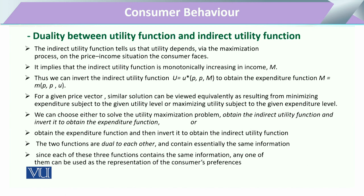The indirect utility function is also increasing in money income. If we invert the utility function — that is, when we say utility is a function of prices and income — we obtain the expenditure function. The expenditure function M, or E in some examples, is equal to the prices and utility U, where U means the utility or the expenditure required to at least attain that particular given amount of utility.